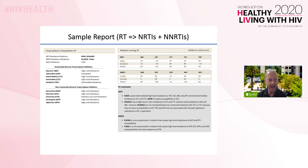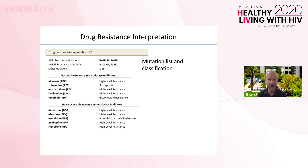This slide shows the NRTI plus NNRTI portion of the report for the sample with the mutations entered on the previous slide. It contains three sections: the interpretation section, the mutation scoring section, and the mutation comments. For each gene, the mutations are classified into three categories. For RT, these are NRTI drug-resistant mutations, or DRMs, NNRTI DRMs, and other mutations.